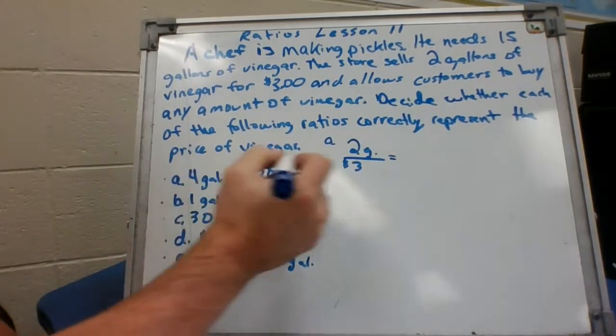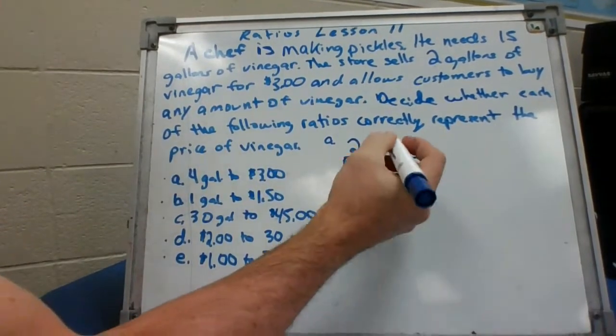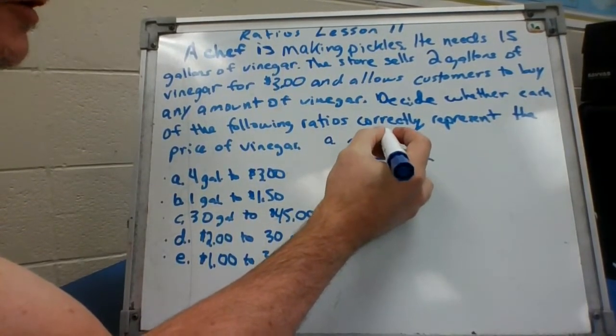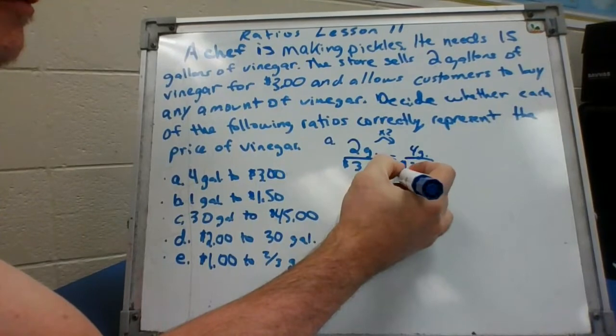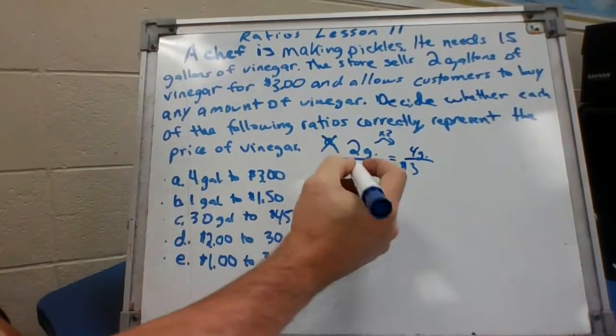Two gallons for three dollars, they're saying four gallons for three dollars. Well we know to get from two to four we gotta multiply by two, so that's not one. We'll go with B.